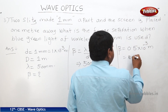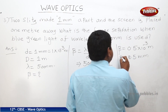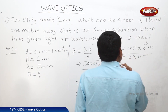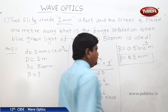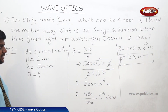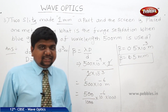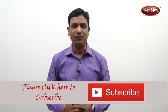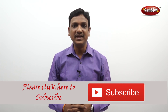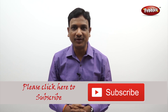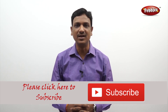Therefore beta is equal to 0.5 millimeters. This is the fringe width for this arrangement. If you liked this video please give a thumbs up and subscribe to our channel to get more videos on CBSE syllabus.